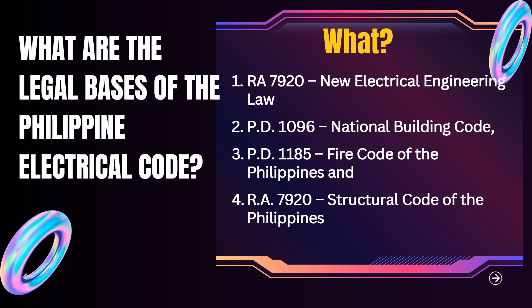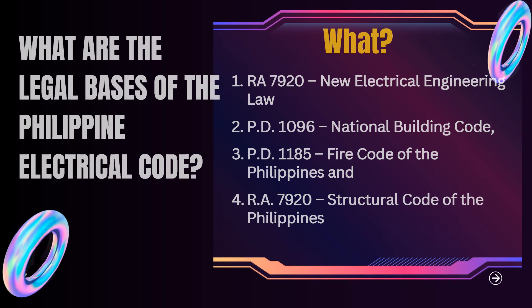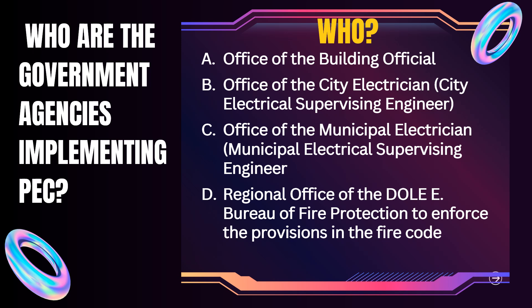Review questions: What are the laws related to PEC? (1) RA 7920 — New Electrical Engineering Law, (2) PD 1096 — National Building Code, (3) PD 1185 — Fire Code of the Philippines, (4) RA 7920 — Structural Code of the Philippines. Who are the government agencies implementing the PEC? (1) Office of the Building Official, (2) Office of the City Electrician/City Electrical Supervising Engineer, (3) Office of the Municipal Electrician/Municipal Electrical Supervising Engineer, (4) Regional Office of the DOLE, and the Bureau of Fire Protection to enforce the provisions in the Fire Code.